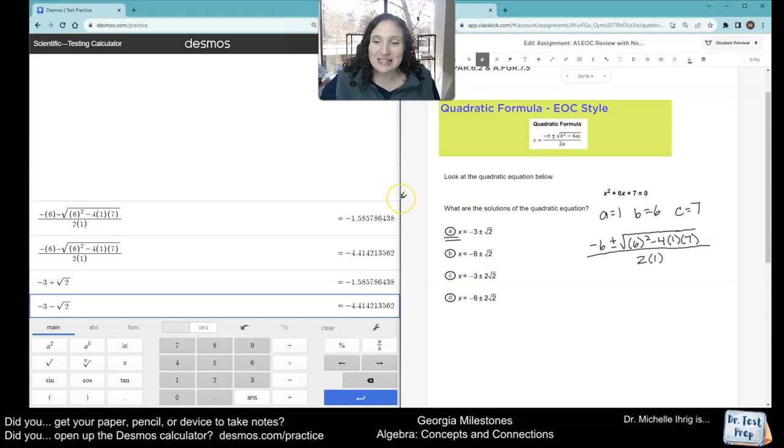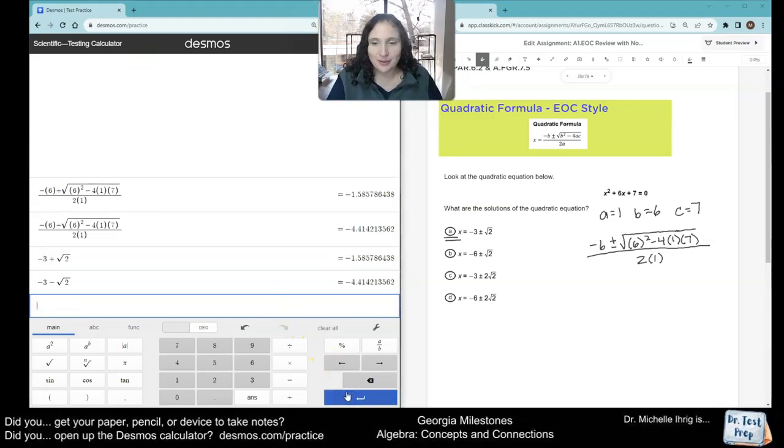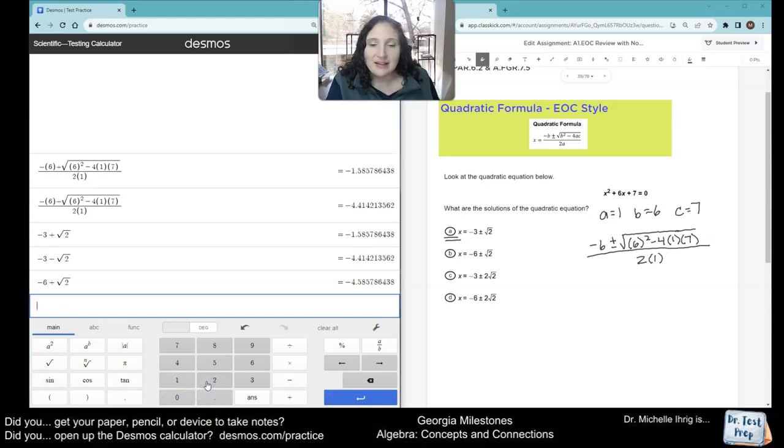Now let me show you when it doesn't match. Because the first two from both sides, it matched perfect. If I do negative 6 plus the square root of 2, notice how I get negative 4.5. And I would need it to get either negative 1.5 or negative 4.4. So because this doesn't match, that's why it's not letter B.